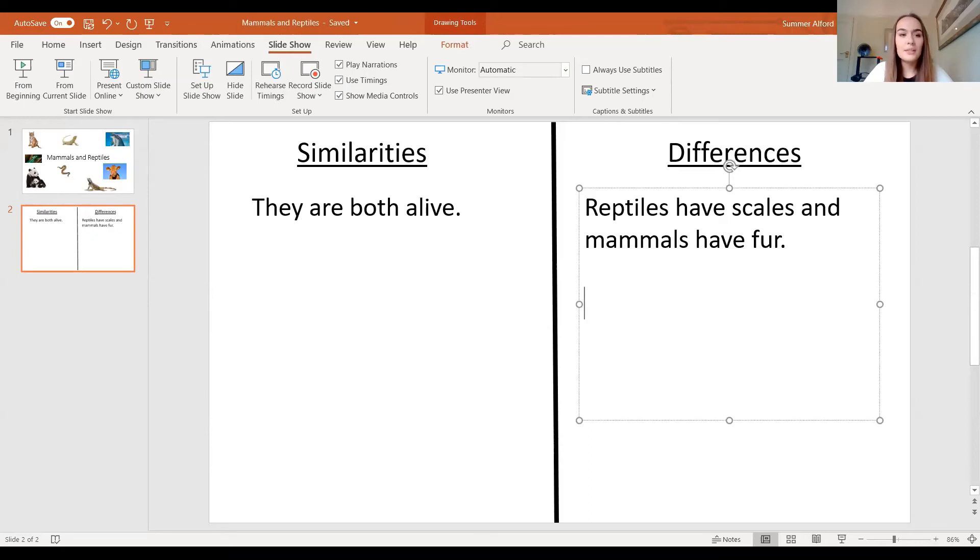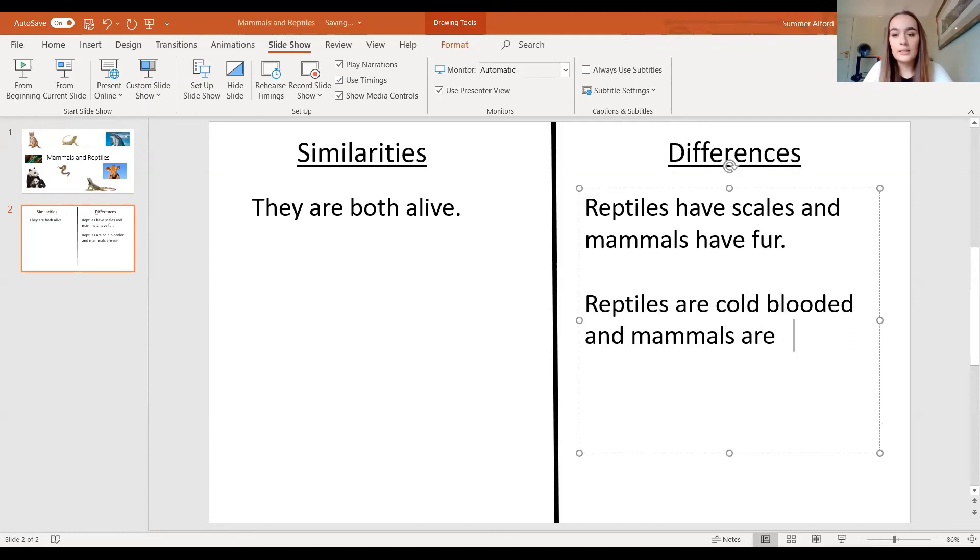I'm going to think about something else that's a bit different about them. I'm going to say that reptiles are cold blooded and mammals are warm blooded. So it's good in your sentences to use the word 'and' to link the sentence together. So reptiles, finger space, are cold blooded and mammals, make sure you spell reptiles and mammals correctly, are warm blooded. Full stop, super.